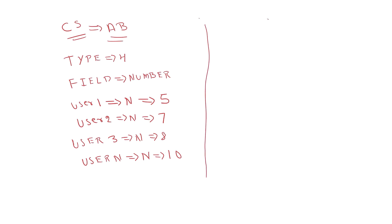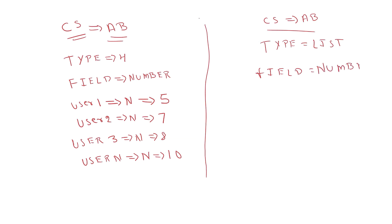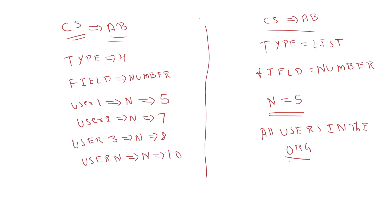Now for the list type, we have the same custom setting AB, with type list, and the same field Number. The value of N will be five for all users — all users in the org, irrespective of what profile or role they have. All users will have the same value: the Number field will be five, and five will be shown to every user in the Salesforce org.